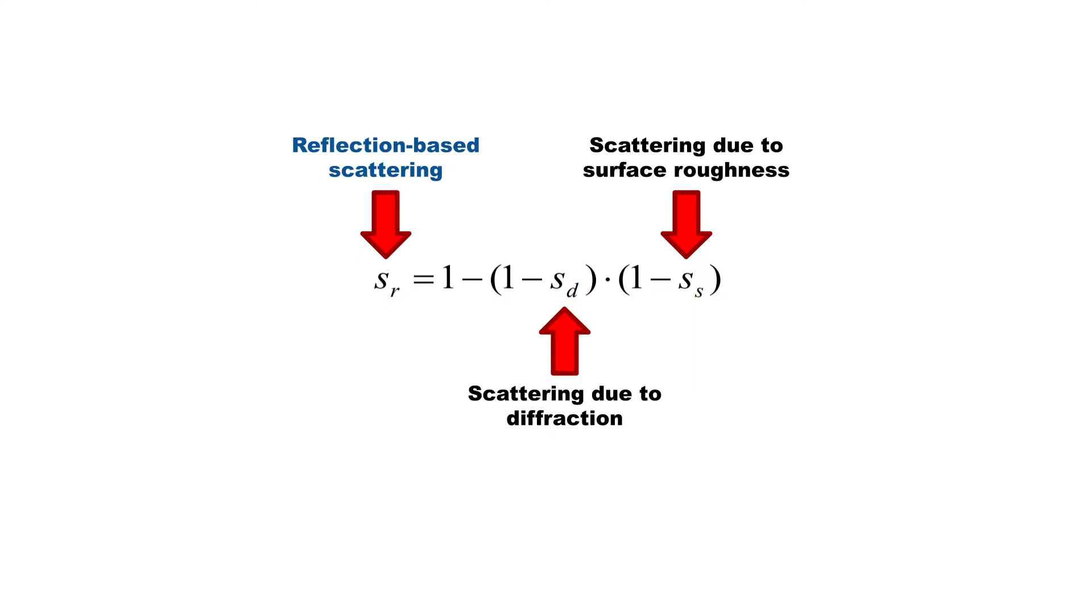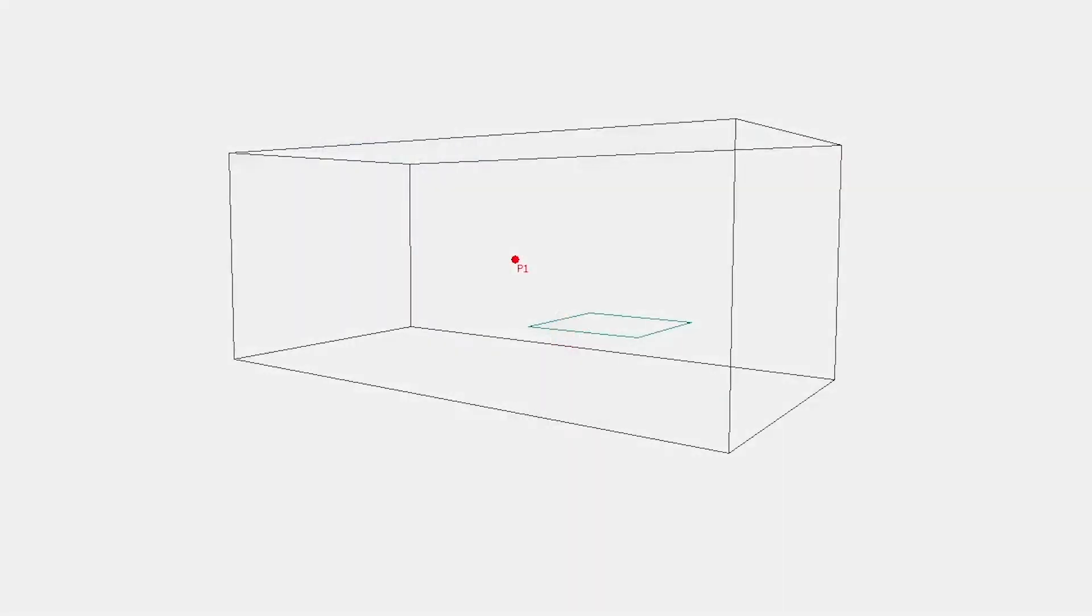Let's look at some examples showcasing the reflection-based scattering in action. Here, we have a floating surface with a low scattering coefficient in a fully absorbent room. Most of the reflections are specular, but we can see that there is a burst of scattering at the edge of the surface. This is because ODEON is taking into account the distance from the point of incidence to the surface's edge.